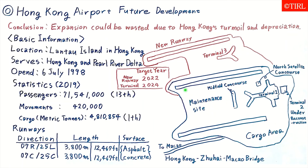The north region is the development area of this airport. A new runway is currently under construction here, and Terminal 3 is also under construction, located here.